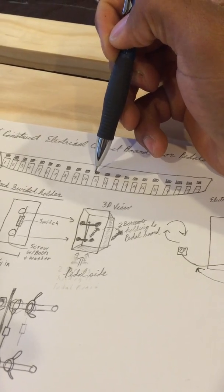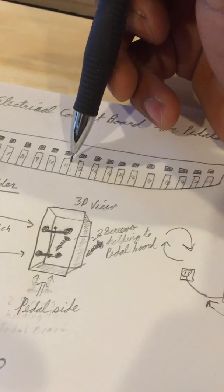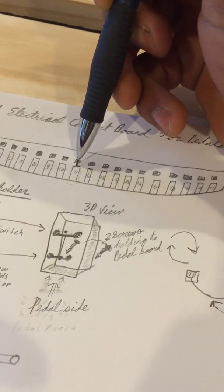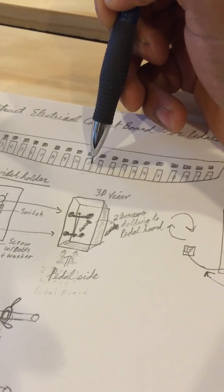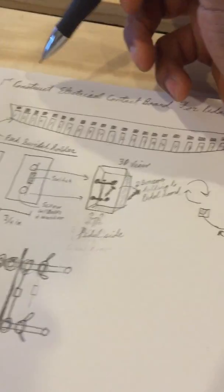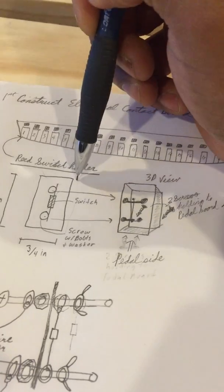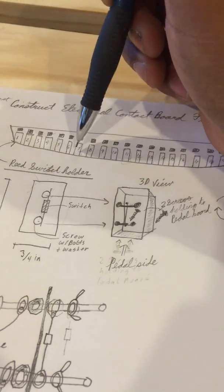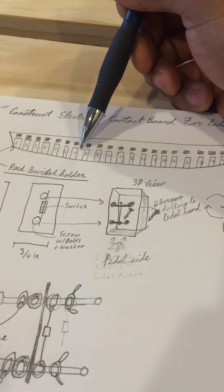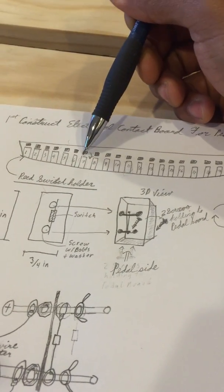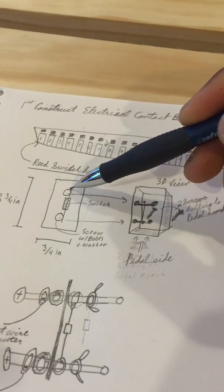Here, imagine this is our pedal board. The black dots are the magnets on the end of each pedal. These little squares here are going to represent pieces of wood that we're going to use to mount our reed switch. So imagine this square is this square here just turned over on this other side.